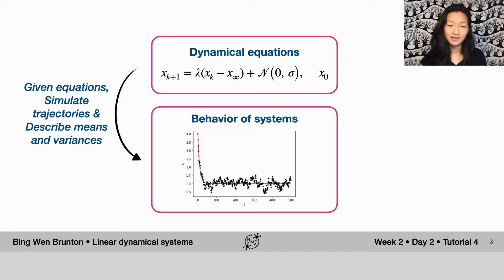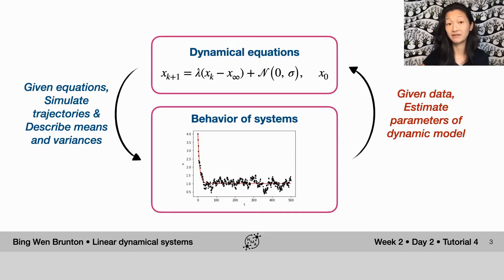But what happens if you don't have dynamical equations, but instead you have data? This is actually really relevant, especially for experimental neuroscience. You don't start with governing equations of the brain, you start with data. So if you start with data and you have at least some notion of the type of dynamical equations that might be governing that behavior, what you want to do is the opposite. You don't want to simulate the system, you want to estimate the parameters of the dynamic model if you're given data. That's the topic of this last tutorial.